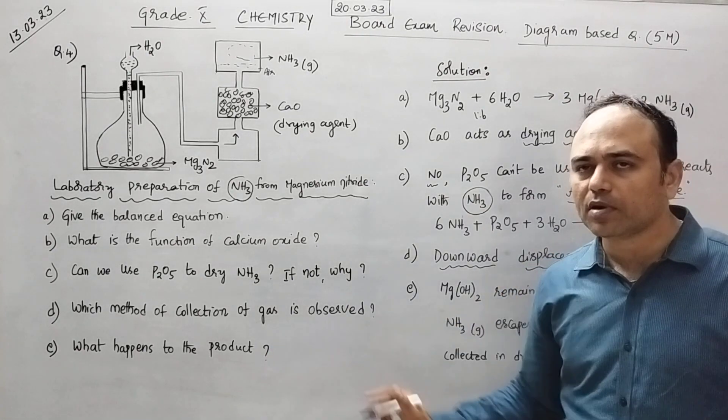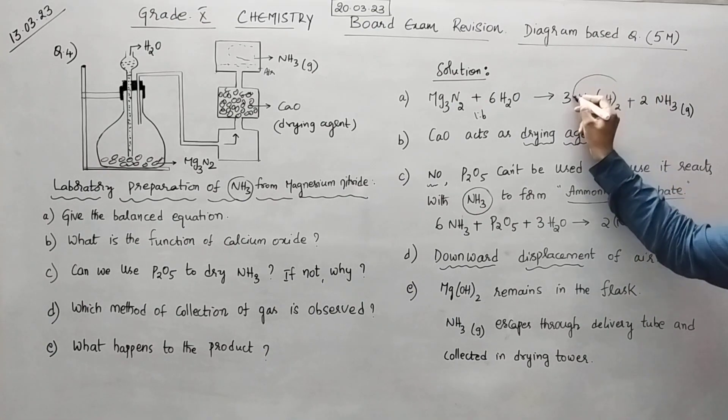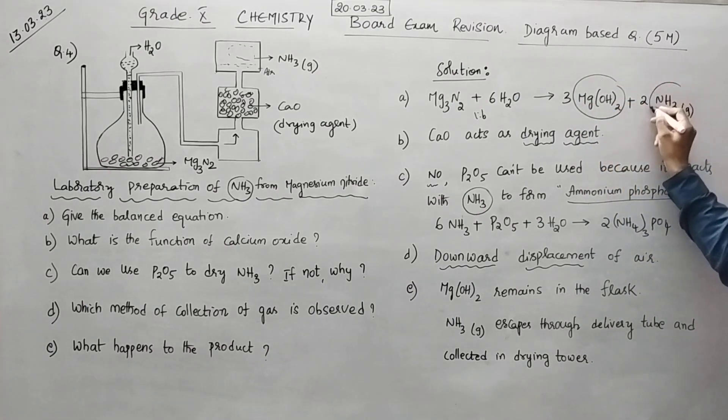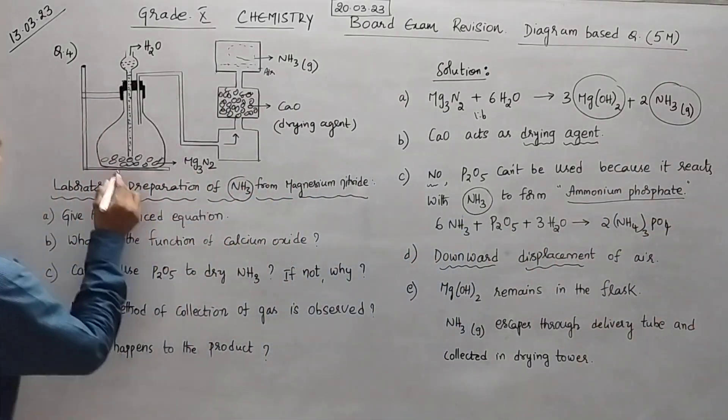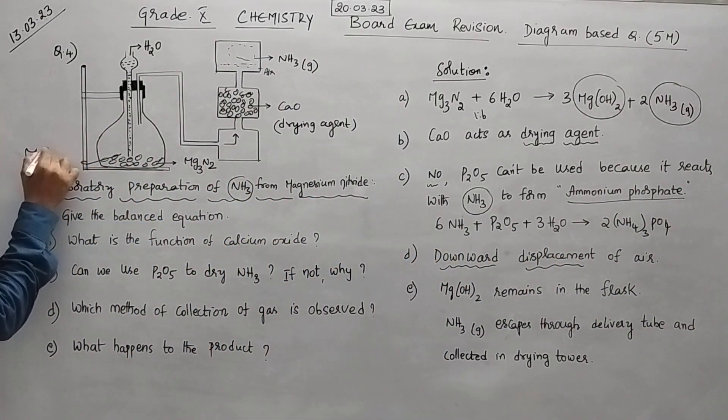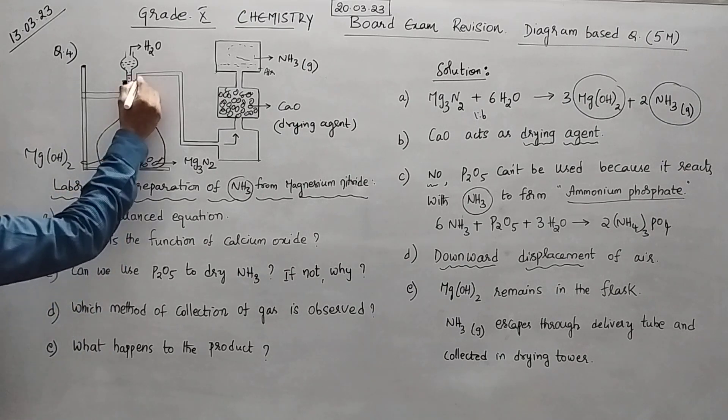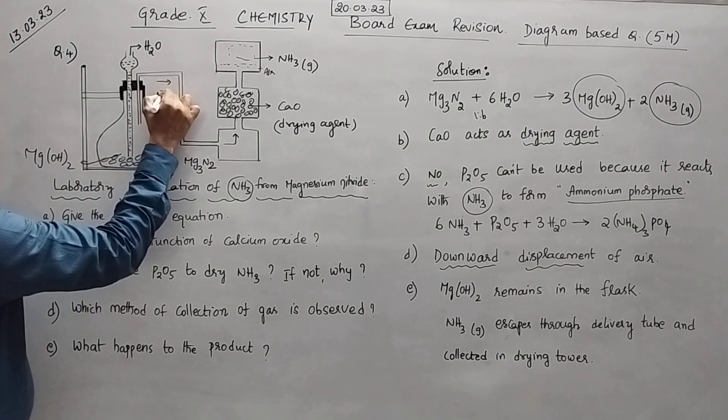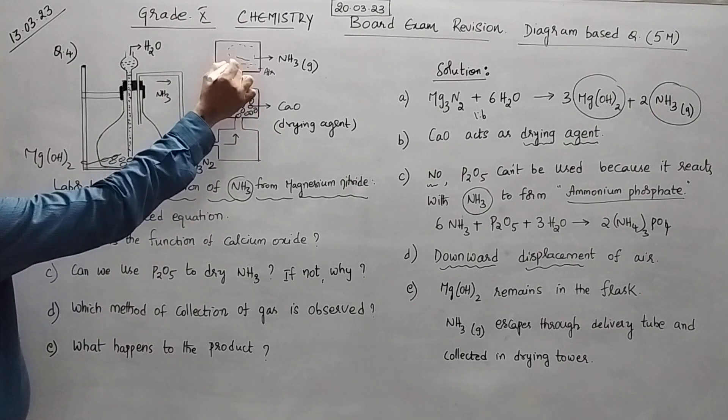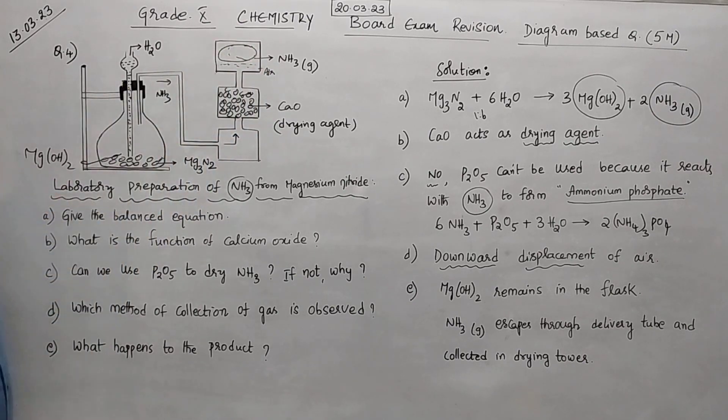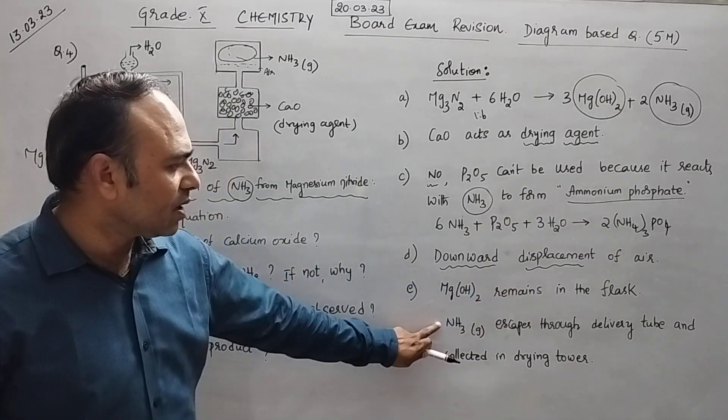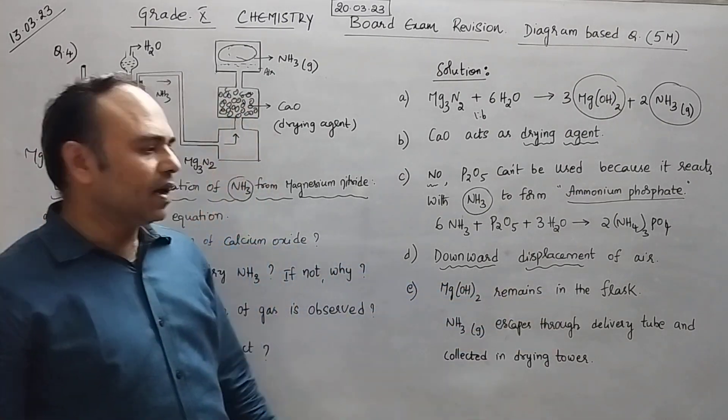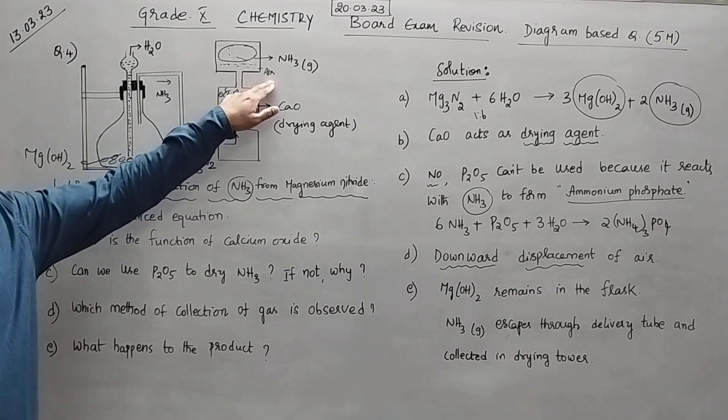Next. Last one is what will happen to the product. We have two products obtained. First one magnesium hydroxide. Second one is ammonia gas. What will happen now after the reaction. Here magnesium hydroxide will be collected in this flask. And through this delivery tube, what will happen. NH3 will escape and finally gets collected over air here. So that is what is written. Magnesium hydroxide remains in the flask. But ammonia gas escape through delivery tube and is collected in the drain tower.